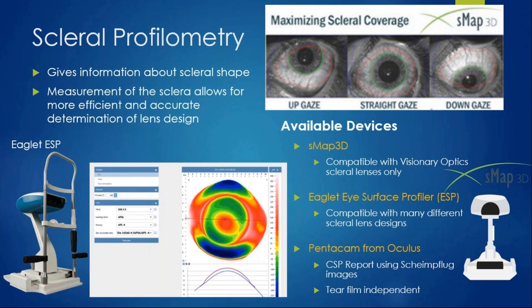In addition to corneal topography, scleral profilometry is more helpful for designing the lens because we land on the sclera. There are three main devices: the SMAP 3D from Visionary Optics, the Eaglet Eye Surface Profiler which is compatible with many more lens designs, and the Pentacam from Oculus—some versions of which include scleral shape information.